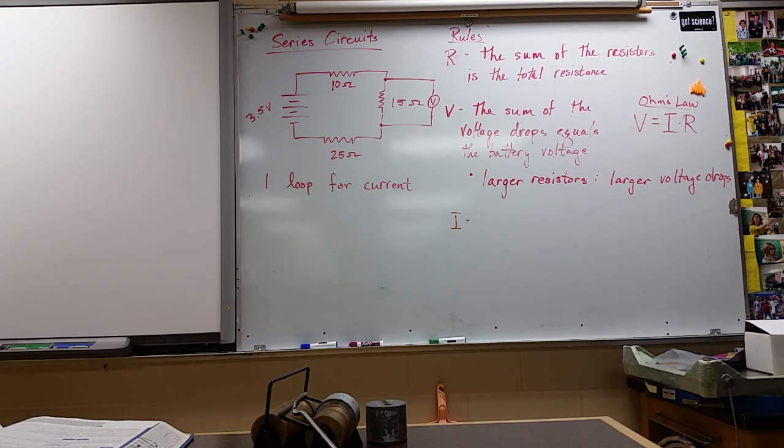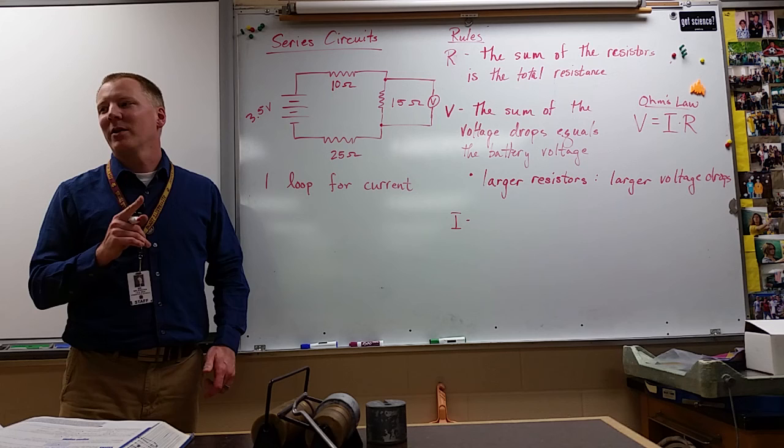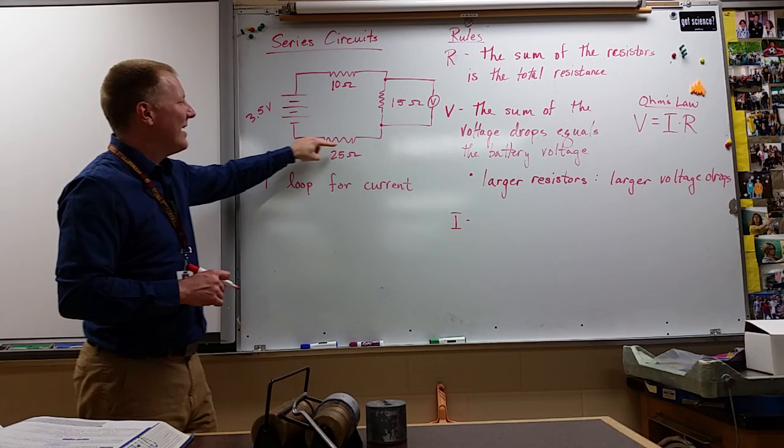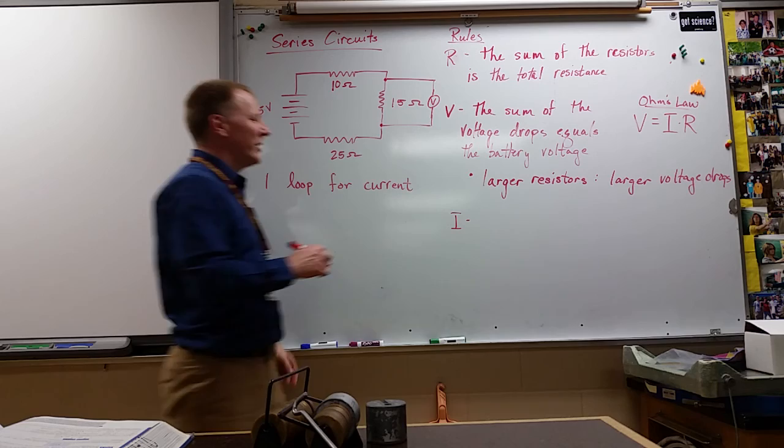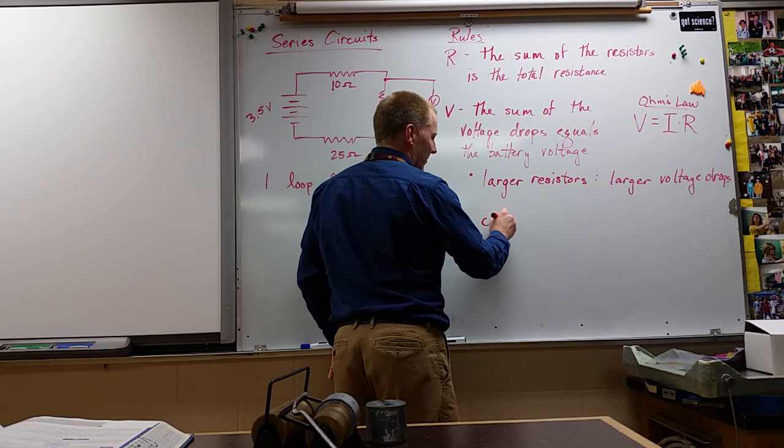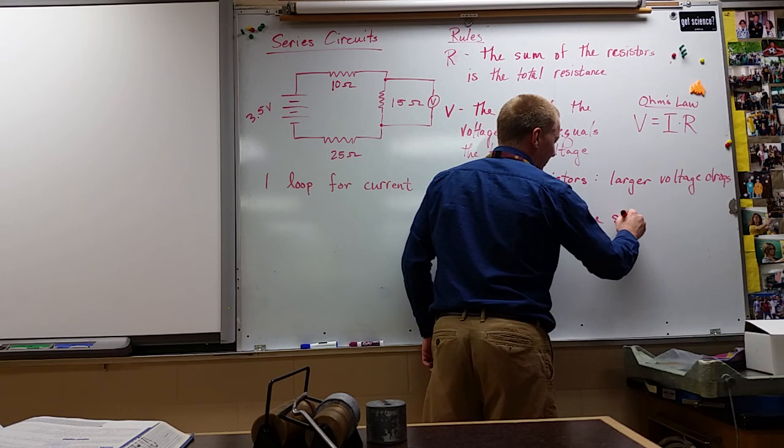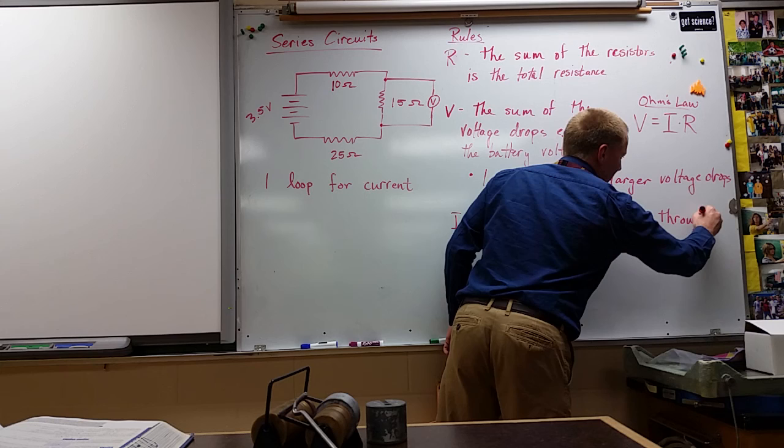Okay. And then the last rule will be about current. Current, I kind of implied this one for you rather than having you measure it. There was no particular place you had to put your current measurement. There is a correct way to hook it up, but there's no real correct place to put it because any electron leaving our battery has to go through all three resistors in order to get back to the other side of the battery. That means that all of the current going through here must go through all of the other points, and the current has to be the same everywhere.